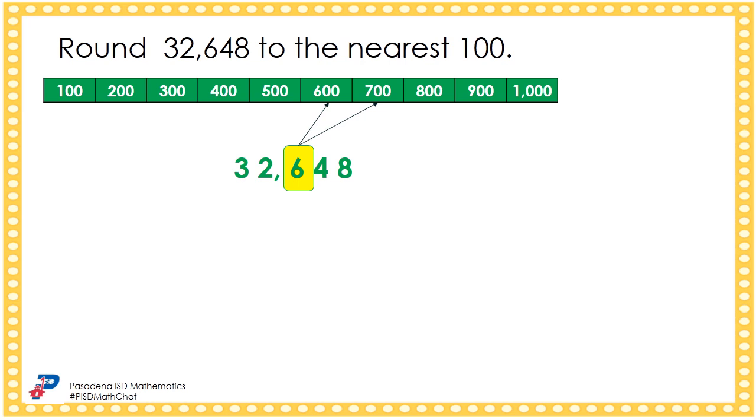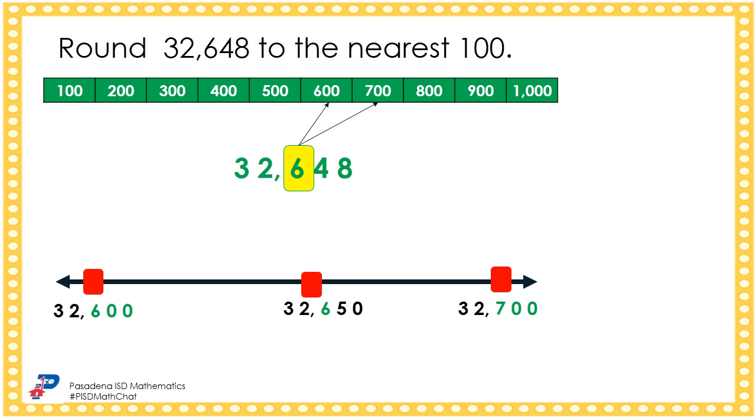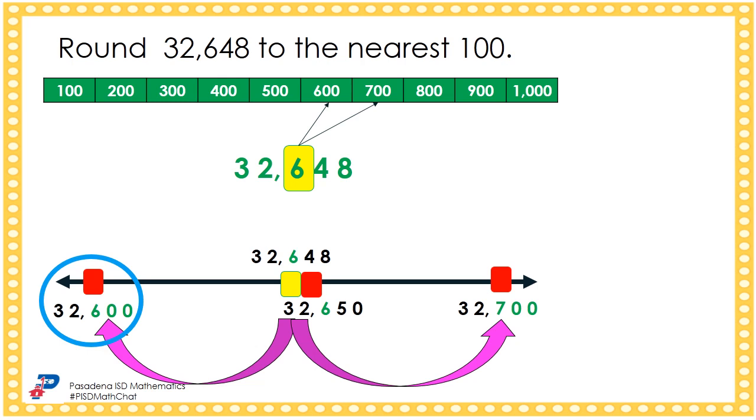Now let's place the two consecutive multiples of 100 for the whole number on a number line. That's 32,600 and 32,700. The point 32,650 is between 32,600 and 32,700. If we think about 32,648, we can estimate that its location on the number line would be just before 32,650. This means 32,648 is closer to and rounds to 32,600.